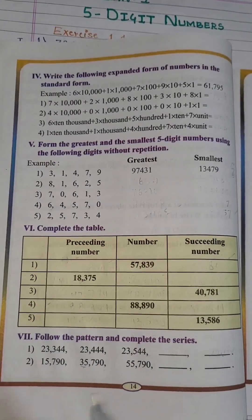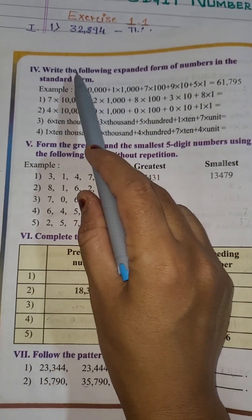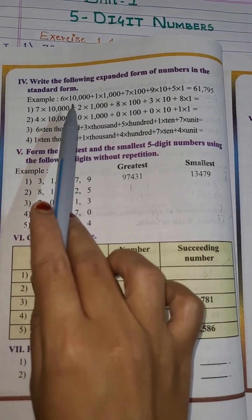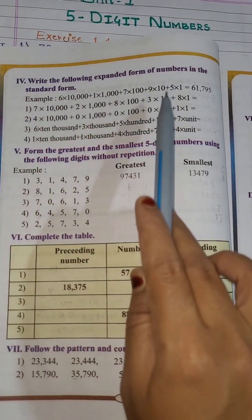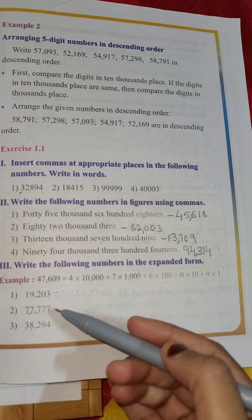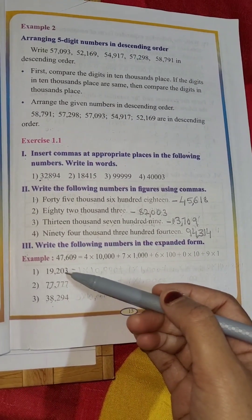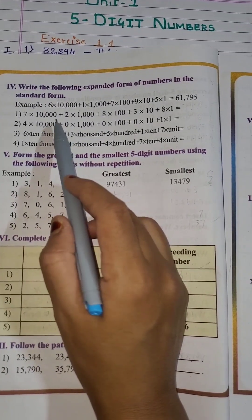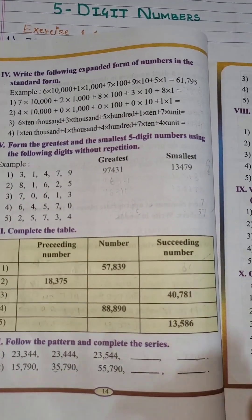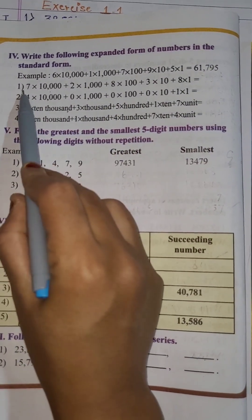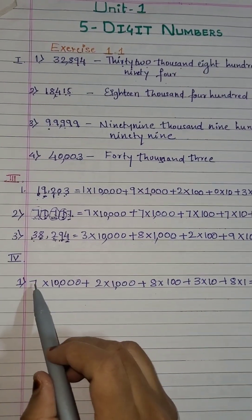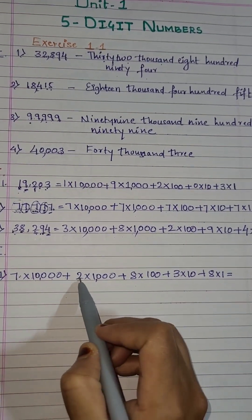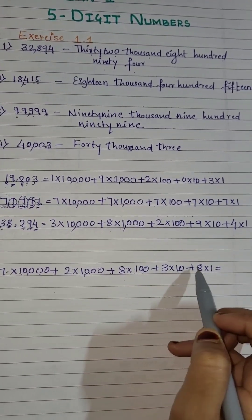Is that clear? Now open page number 14. Turn the page. Next, the 4th sum. Write the following expanded form of numbers in the standard form. Here they have given the numbers in the expanded form and you have to write it in the standard form. In the previous sum they gave in the standard form and we wrote in the expanded form. But here they have given the expanded form and we have to write in the standard form. We will take the first example. So: 7 into 10,000 plus 2 into 1000 plus 8 into 100 plus 3 into 10 plus 8 into 1.